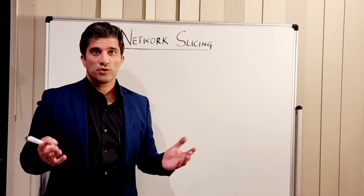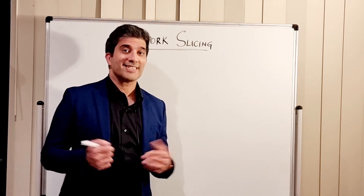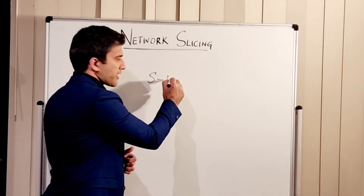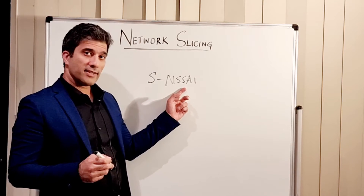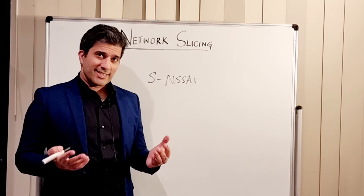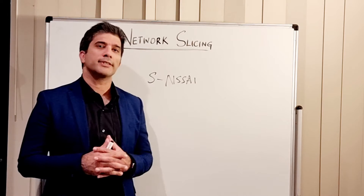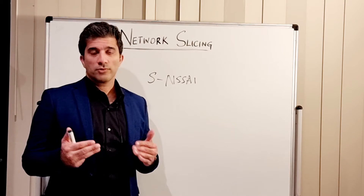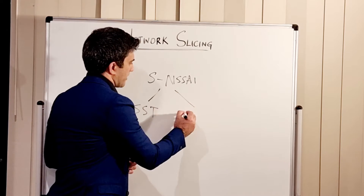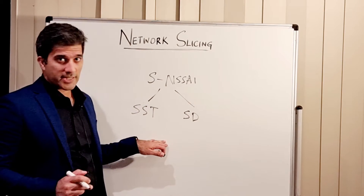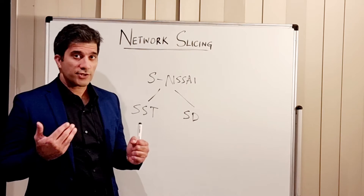What is network slicing in terms of 3GPP specifications? One of the most important terms in slicing is the SNSSAI — Single Network Slice Selection Assistance Information. It gives an identifying number or code that your UE is assigned to in the core network. This identifier consists of an SST (Slice/Service Type) and an SD (Service Differentiator).